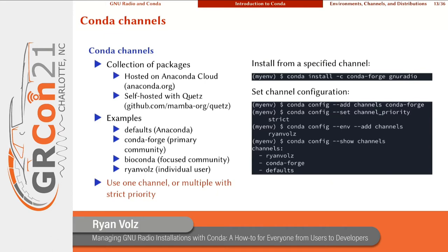You can install from a specified channel with your conda install command by passing the `-c` flag and then the channel name. It's also possible to set the default channels for a particular conda install or for a particular environment by modifying your conda configuration and adding the appropriate settings.